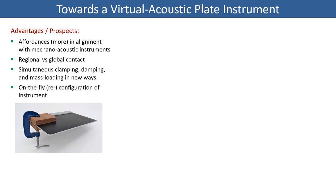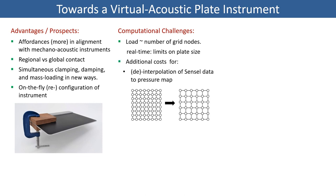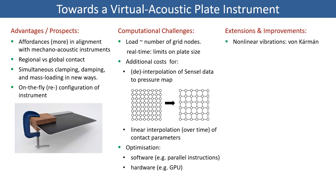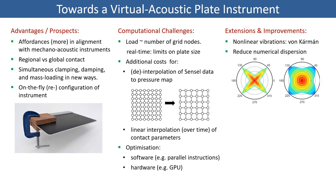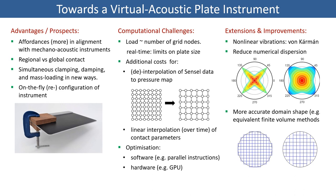All of this throws some computational challenges though. In particular, we face additional overheads for mapping the sensor data to the finite difference grid, which involves 2D interpolation. And the costs go up even further if we add some much desired non-linearity to the model, for example, by extending to a von Kármán plate model. Other than that, improvements can also still be made in terms of less numerical dispersion, and for a circular plate, more accurate boundaries.